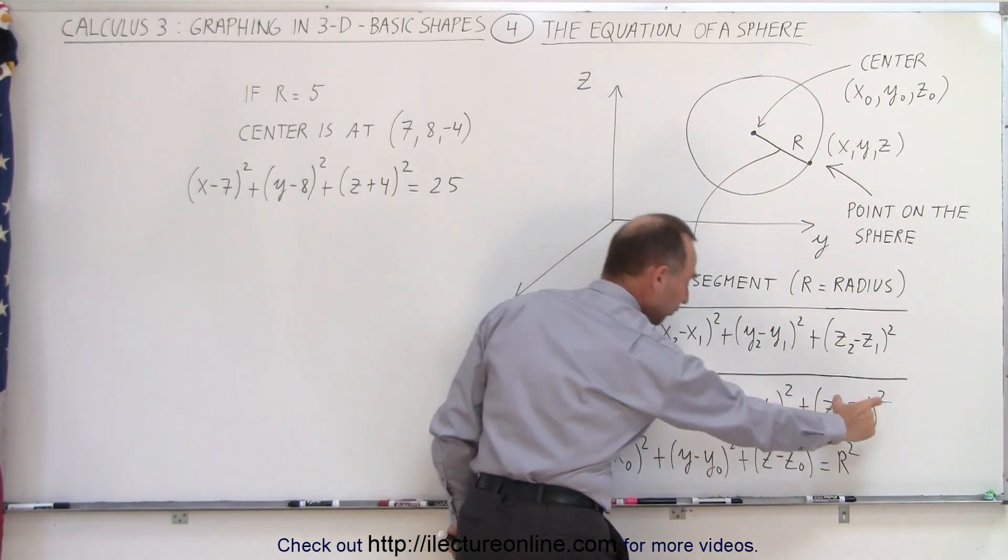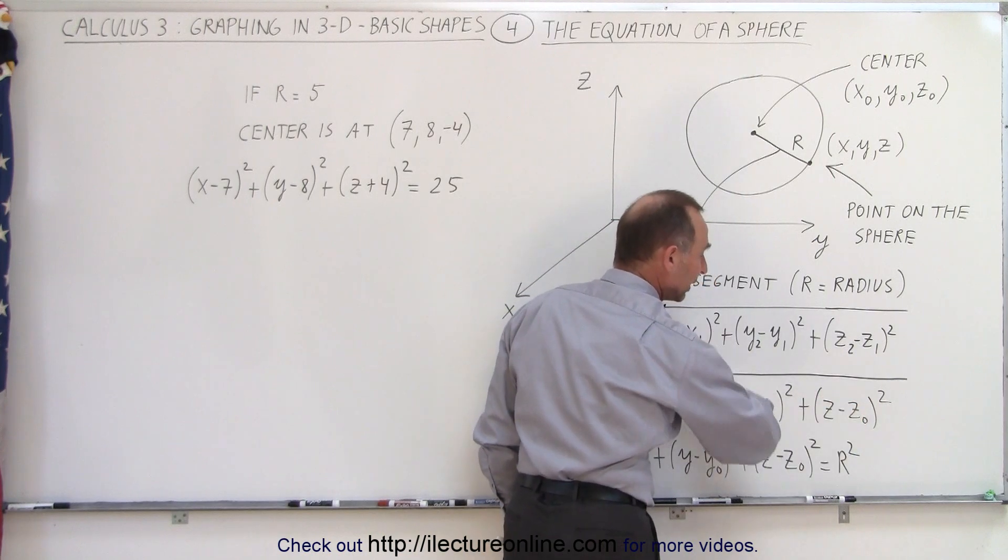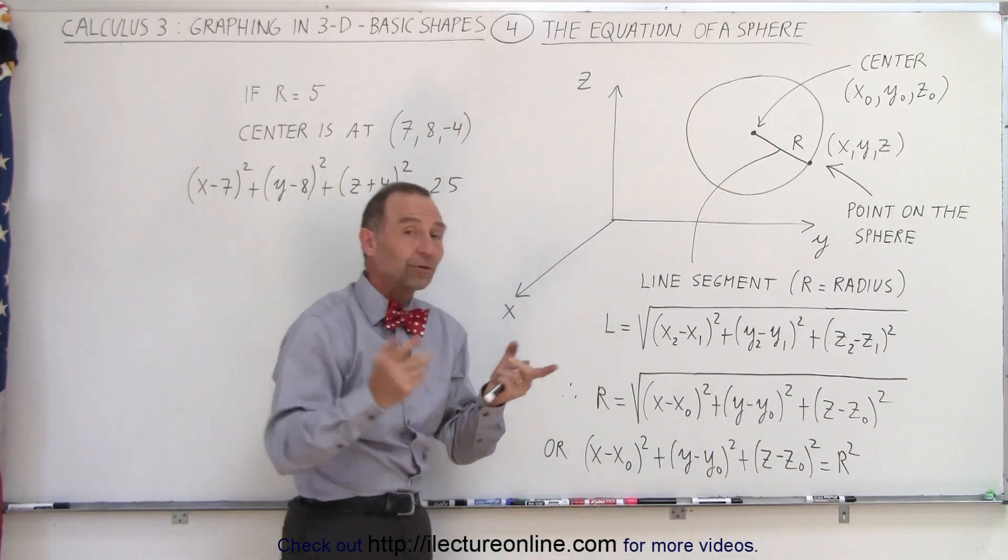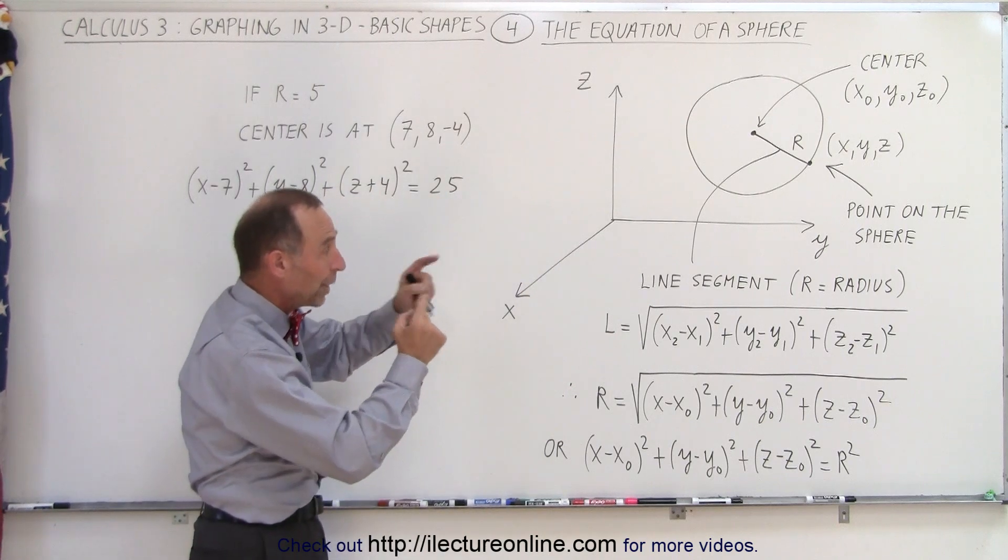We square the differences, we add them together, we take the square root, and that will be equal to the length of the line segment, which in this case is equal to the radius of the sphere.